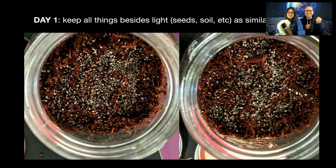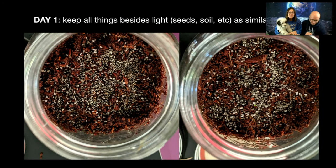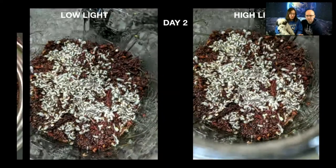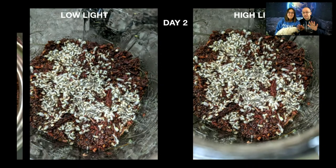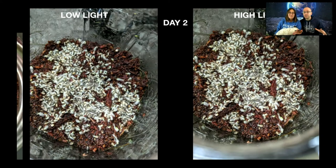Here we are on day one setting up our bright light versus low light — you can see the amount of dirt in both jars is pretty much the same. On day two, our seeds are sprouting pretty much the same as well. You probably want to watch the video and then set up the experiment, not do it along with us. This is one that will take a long time to perform, but we will show you how to set it up.